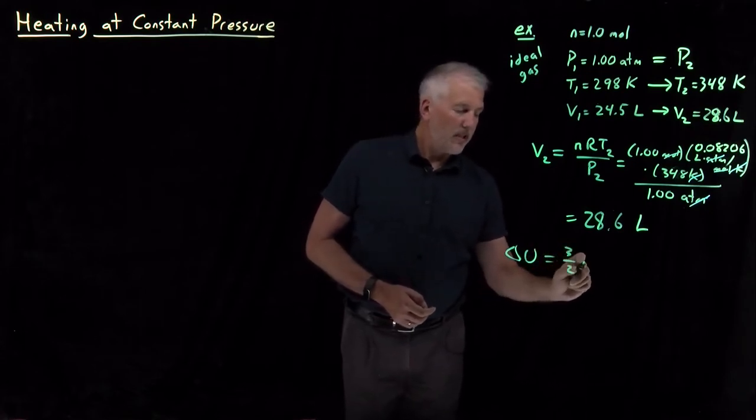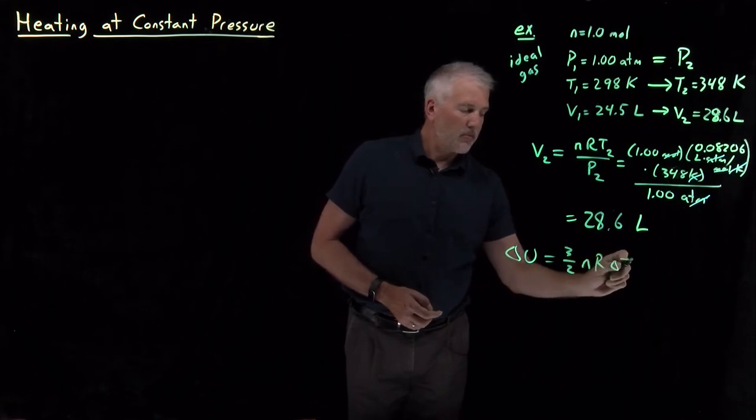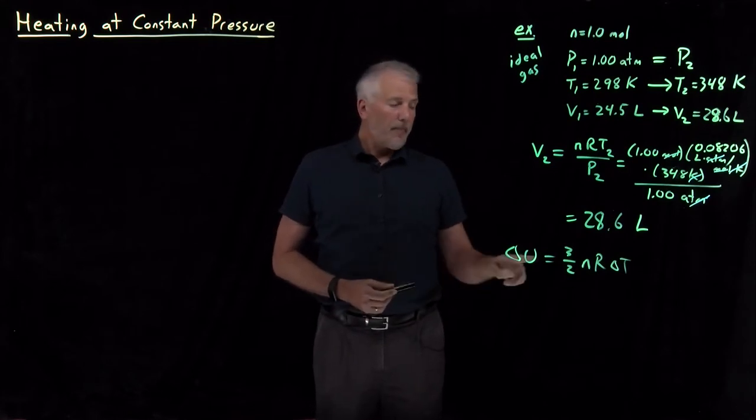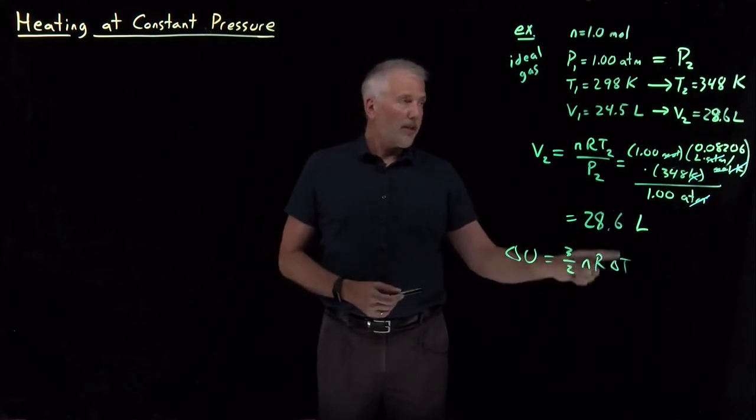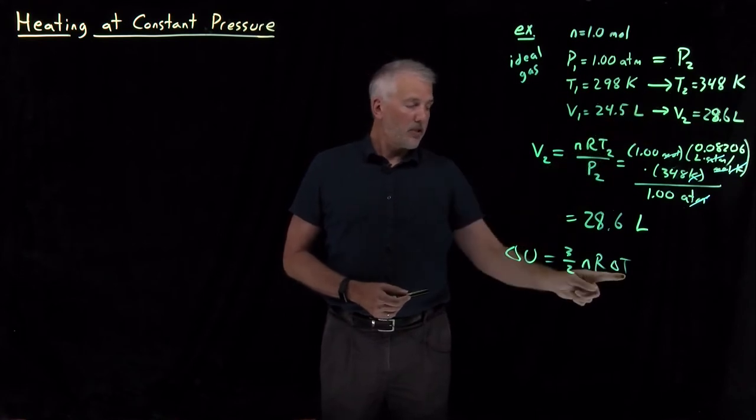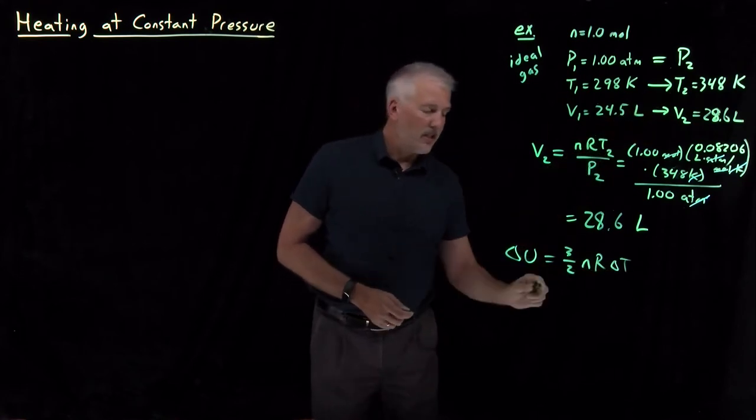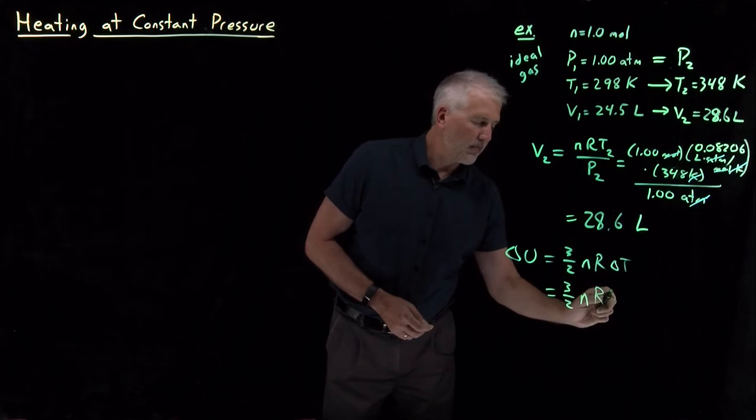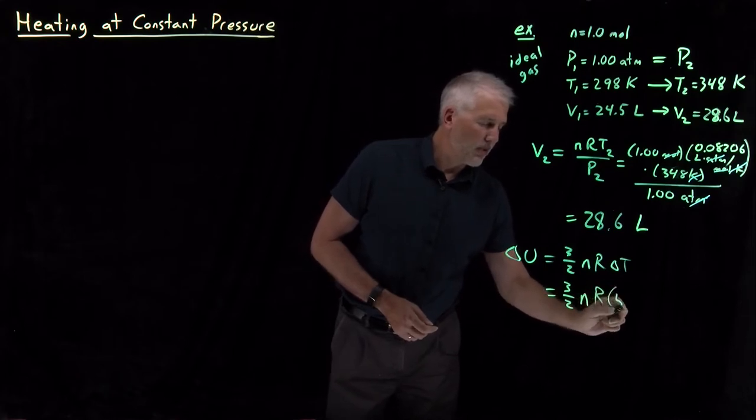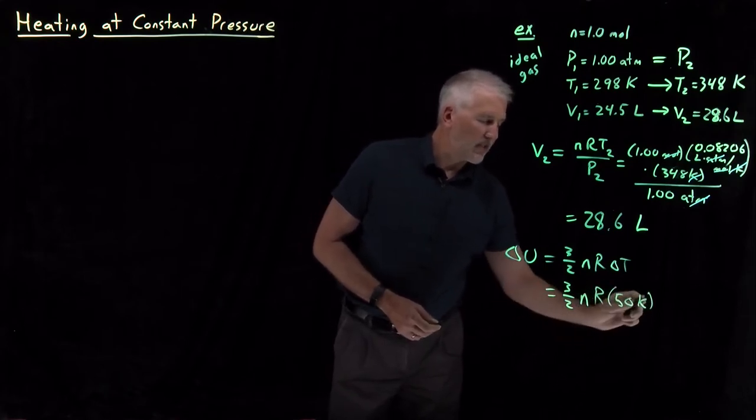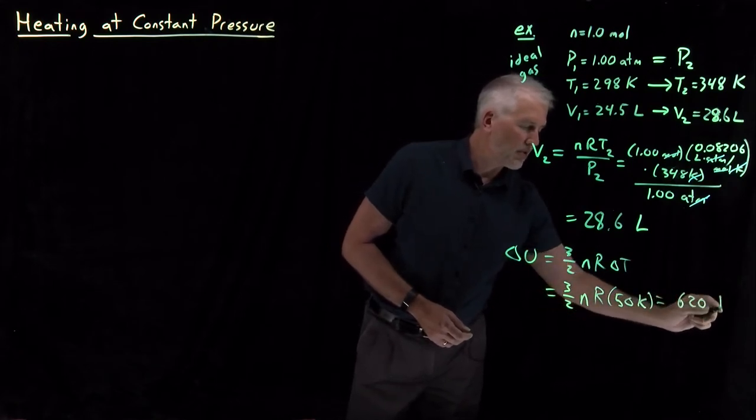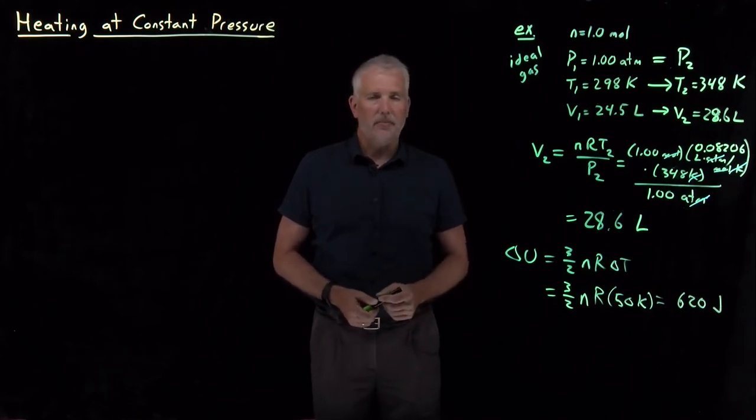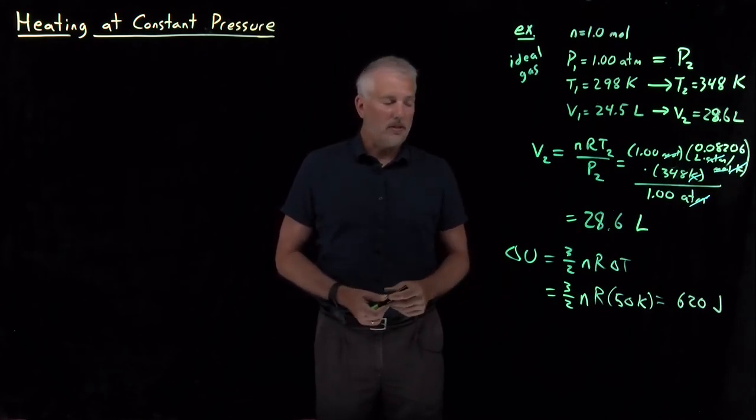Internal energy—that's exactly the same as it was before. Remember, energy is a state function, so it doesn't matter whether I took a constant pressure or constant volume path. The amount by which I change the temperature is all I need to know to calculate the change in the energy. So 3/2 nR ΔT is the same thing as it was previously. If I plug numbers into this expression with one mole and the gas constant, that's going to work out to the same 620 joules that it was for the isochoric process.